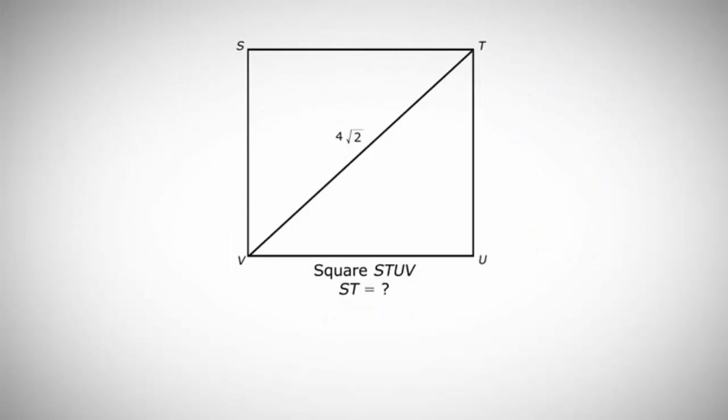Now take a look at example 7. In this diagram, we're given a square STUV with a marked diagonal of 4 times the square root of 2. The question asks us to solve for ST.